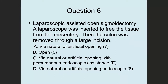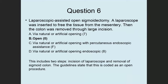Question 6: Laparoscopic assisted open sigmoidectomy. A laparoscope was inserted to free the tissue from the mesentery, then the colon was removed through a large incision. Is this via natural or artificial opening, open, natural or artificial opening with percutaneous endoscopic assistance, or via natural or artificial opening endoscopic? This is open. Remember the guideline stating this is coded as open — it includes two steps, incision for the laparoscope and removal of the sigmoid colon, but it's still coded as open.